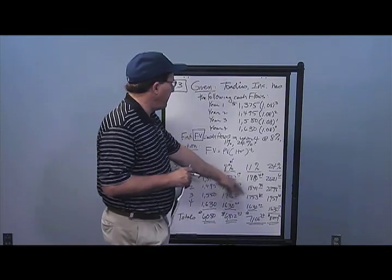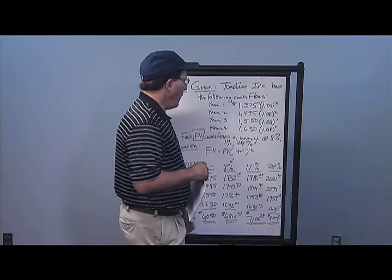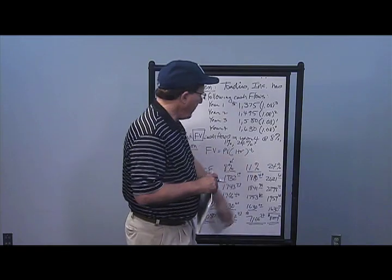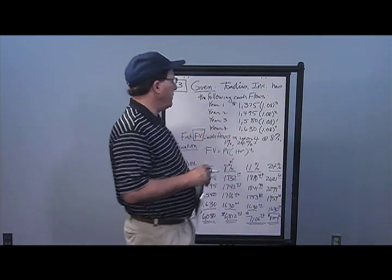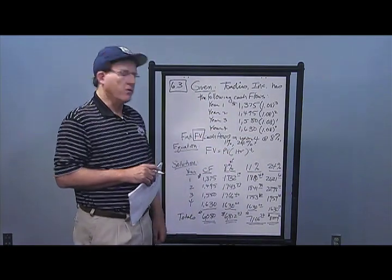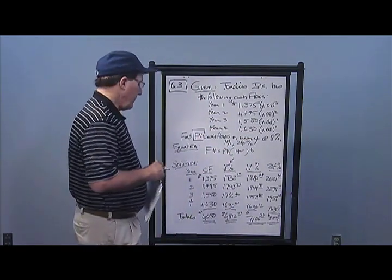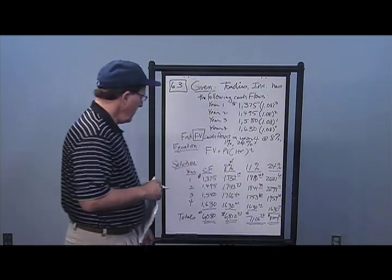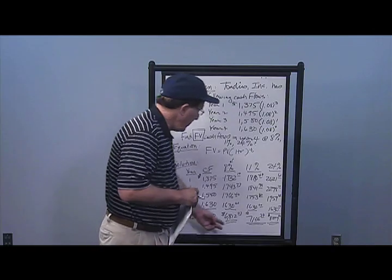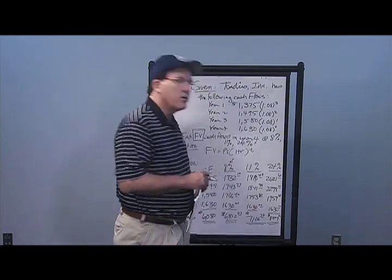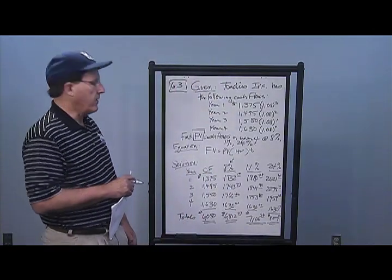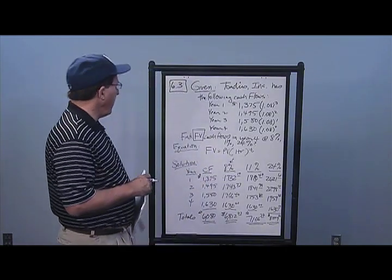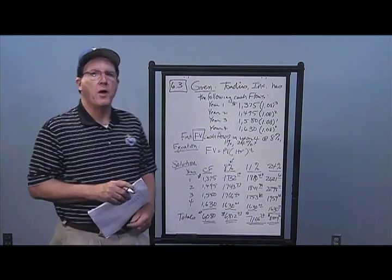I'll do the same thing at 11%, putting in 1.11 in all cases, and the same for 24%, putting in 1.24. Notice that as the interest rate goes up, the compounding rate goes up, and my totals go up accordingly because I'm multiplying by a much higher percentage in that last case. There are your answers to Problem 3.